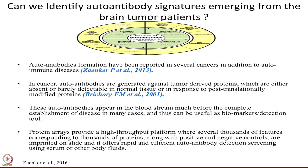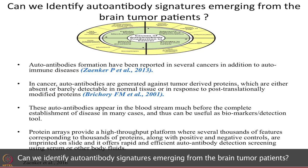I am trying to give you a balanced view of how you should be applying the same samples to understand different types of questions by using different technology platforms. The question is: can we identify auto antibody signatures emerging from brain tumor patients? Many reports and publications have shown that in addition to autoimmune diseases, even in different types of cancer, autoantibodies are emerging from patient samples. In cancer, autoantibodies are generated against tumor-derived proteins which are either absent or barely detectable in normal tissue, or in response to post-translationally modified proteins.